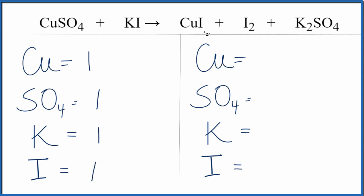Over here, coppers, we have the one. We have one sulfate here, two potassium atoms, and then iodine, two plus the one. That gives us three iodine atoms.